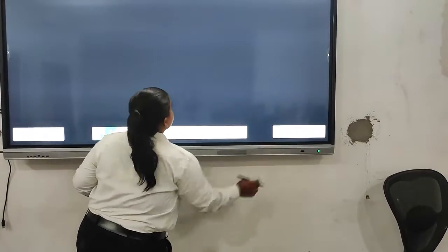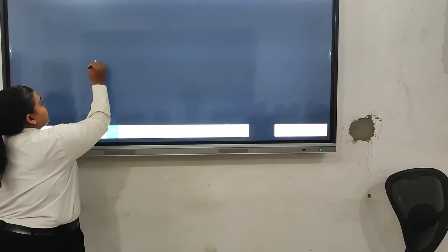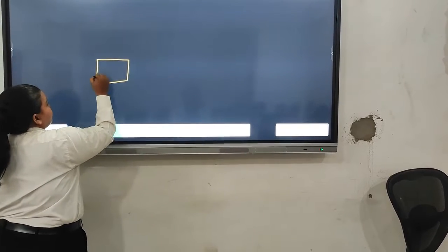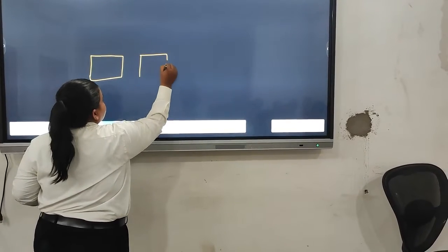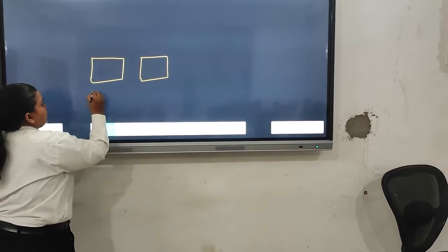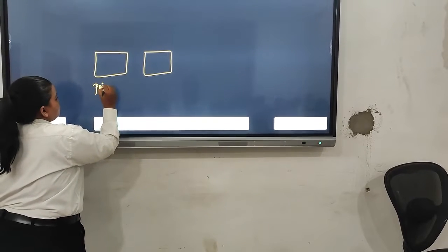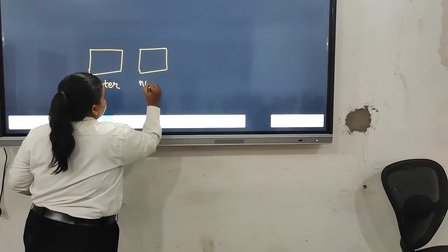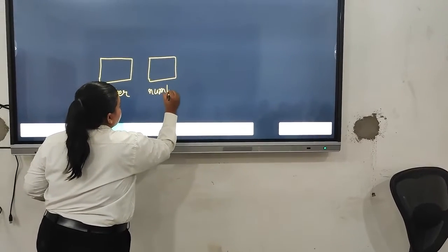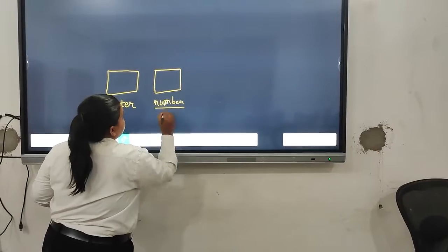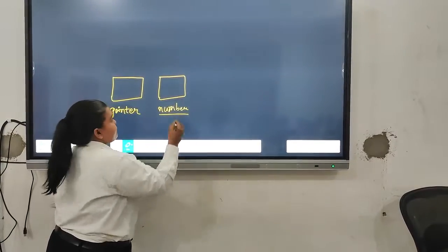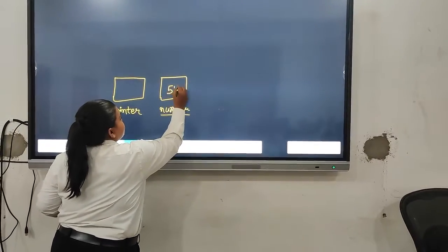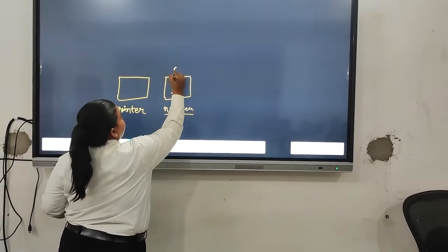So here we will see, here are two blocks in memory. First one, let's say, pointer. Another one, let's say number. So here, number is storing the value, let's say 50, and its address is, let's say, F4.